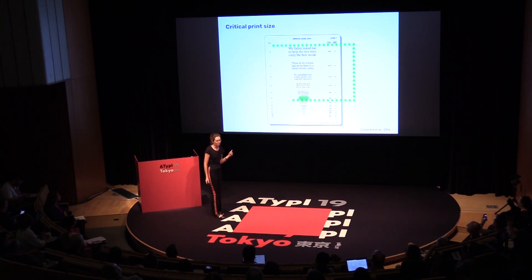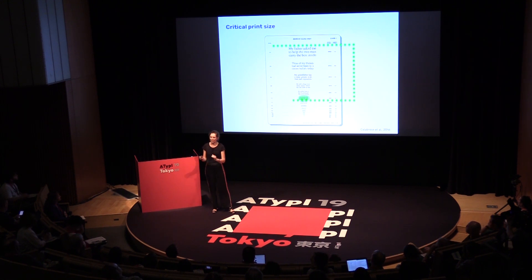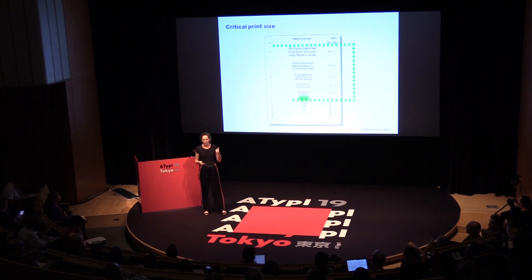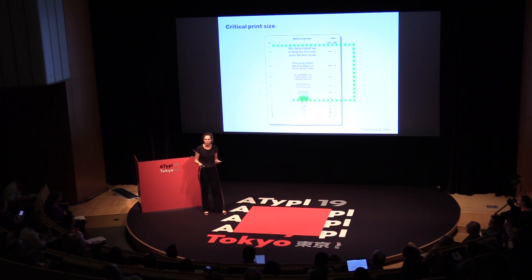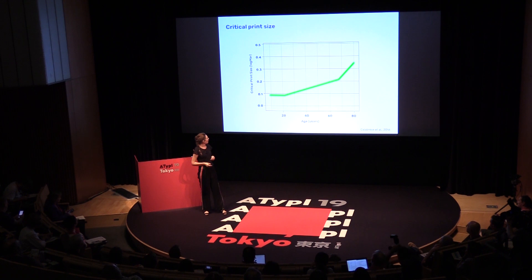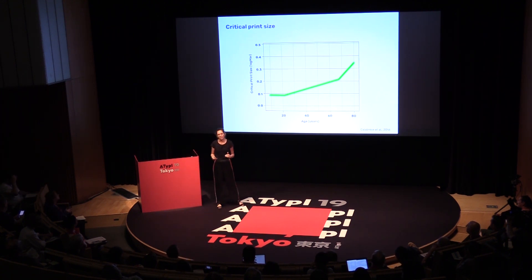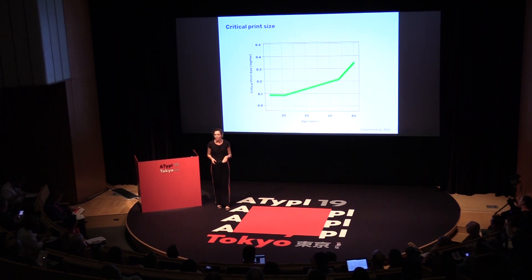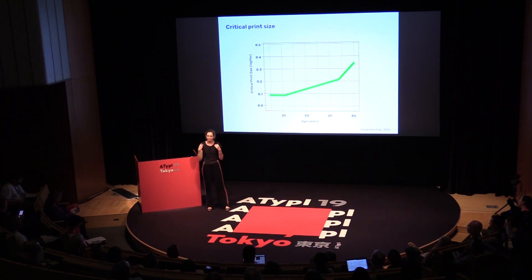This last measure is called critical print size — that is the smallest size within the span of reading speed, so generally the smallest size that you can still read with ease. Here they found, from the age of 23, that the smallest size again got bigger and bigger. So generally, the perceptual system becomes more difficult to read with age.